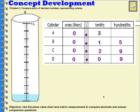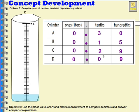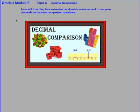So now we can compare these numbers to see which cylinder had the most. Three-tenths — even though I don't have a zero in my hundredths place, I could put one to help me compare — is the same as thirty-hundredths. Thirty-hundredths is greater than twenty-nine hundredths, and it's greater than fifteen hundredths, and it's greater than nine hundredths. That'll take care of things for lesson nine, where we've been using place value charts and metric measurements to compare decimals and answer comparison questions.